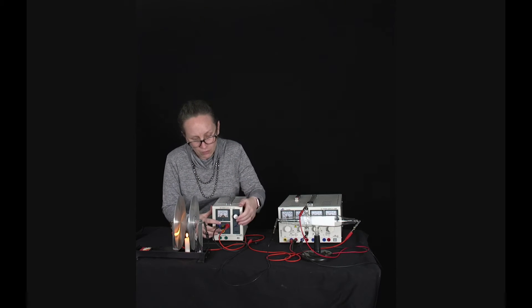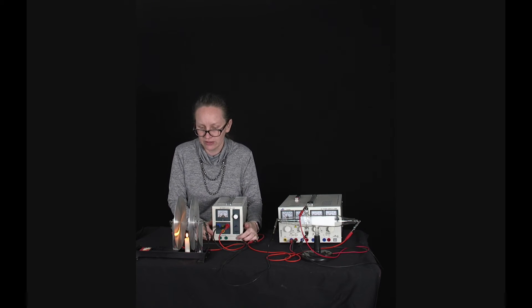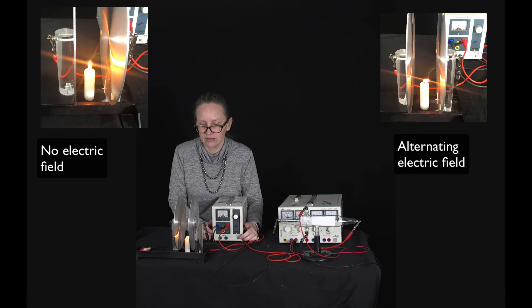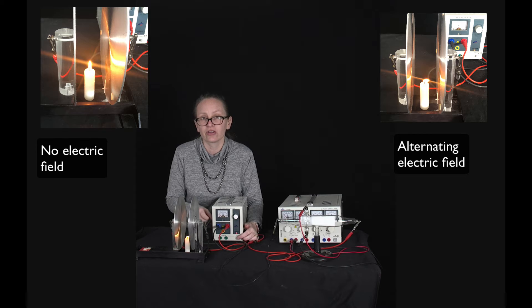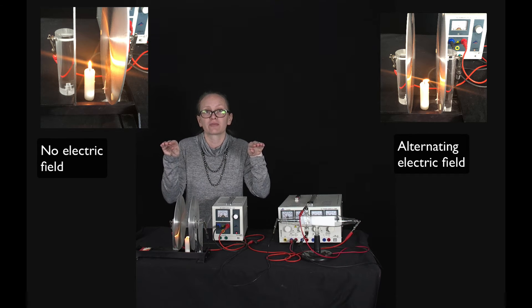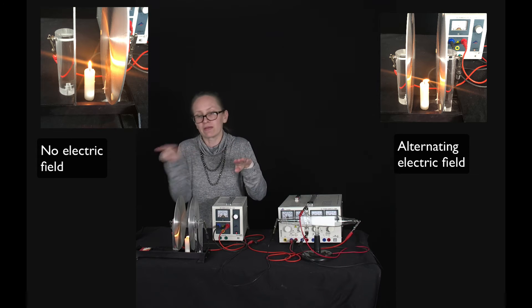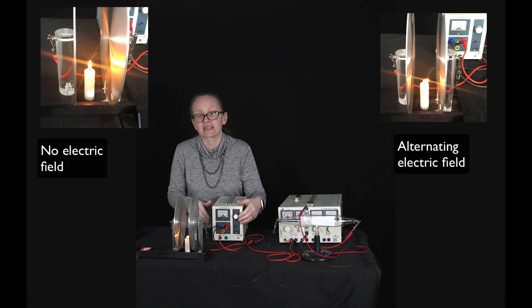But the important thing is that there's an electric field between the plates which is continuously changing direction. So let's have a look at what happens to the candle flame when I turn this on. You can see when it's turned on the candle flame spreads out because the charged particles feel the force from the electric field and they're moving backwards and forwards like this.